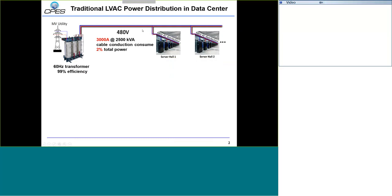One problem is that the power demand for data centers is becoming higher and higher. You can imagine the current on this distribution line is huge. For example, for a 2,500 kVA system, the current on this 480-volt distribution line would be more than 3,000 amps. This 3,000-amp current gives you huge conduction loss — the total conduction loss is around 2% of the total power.